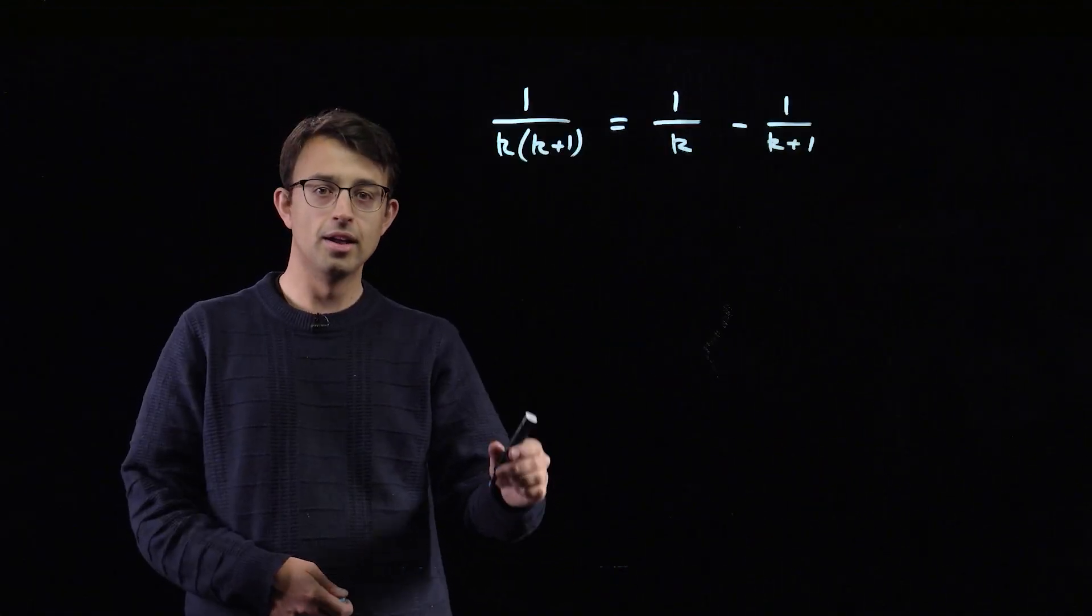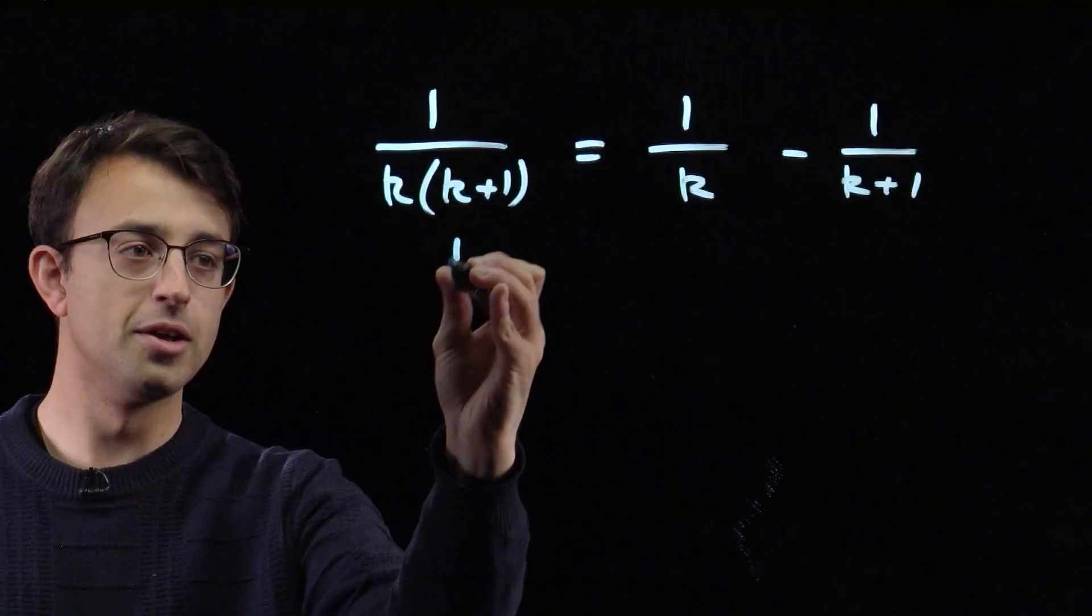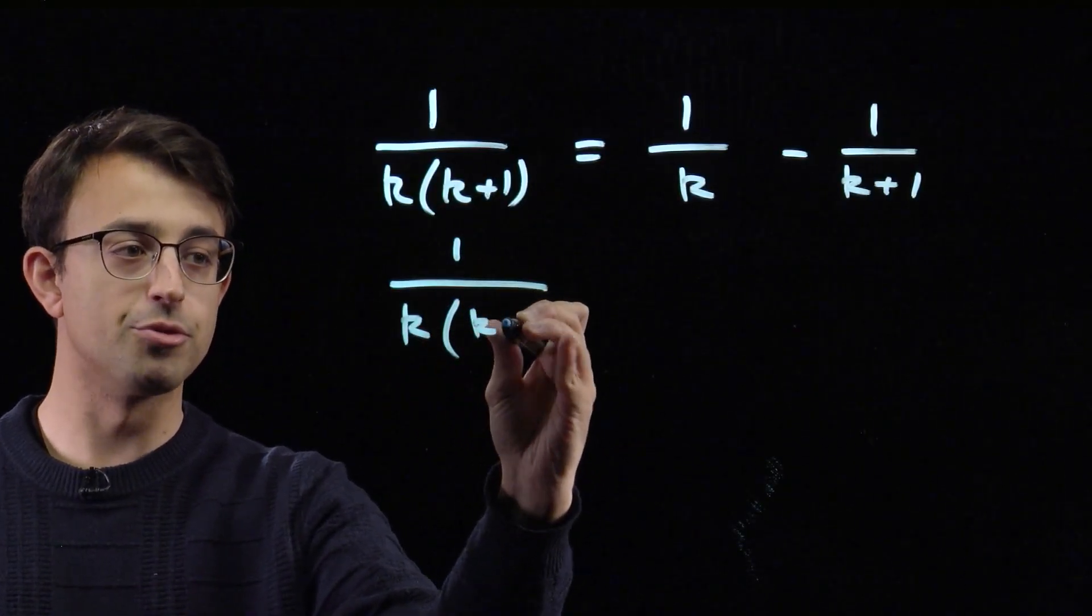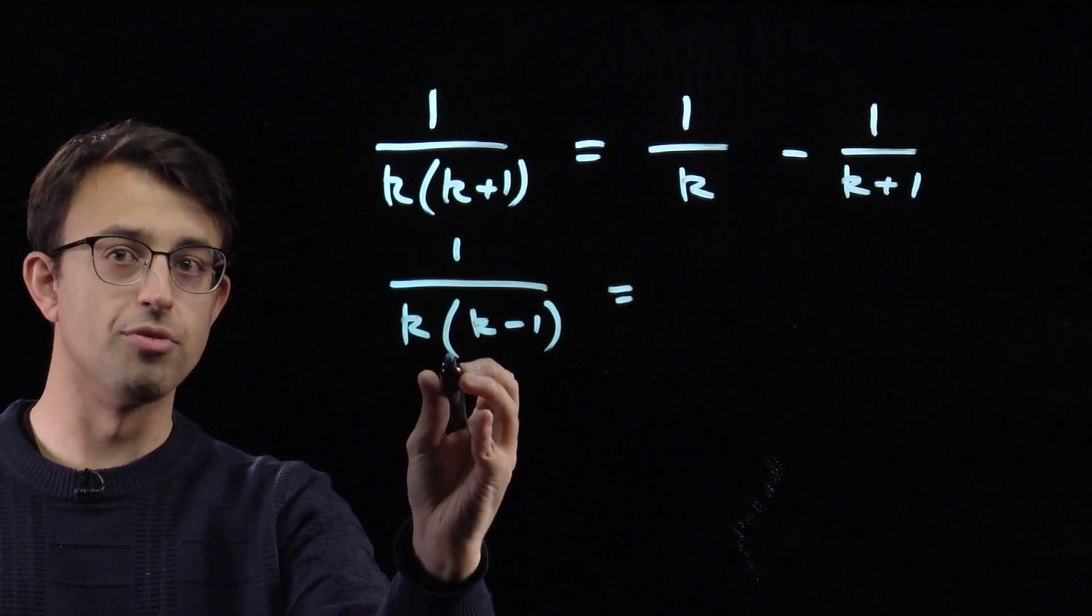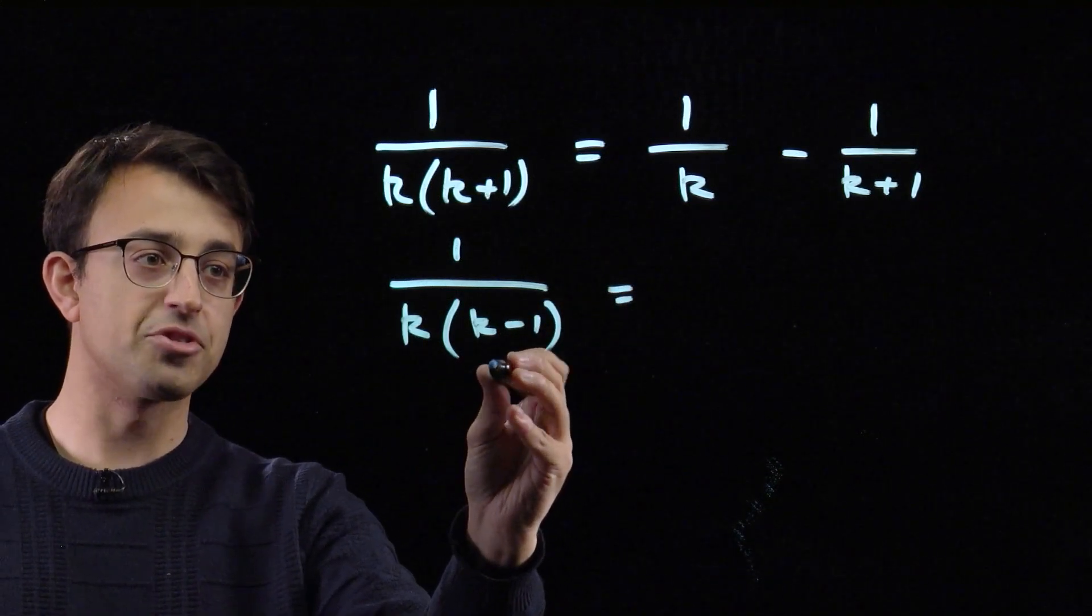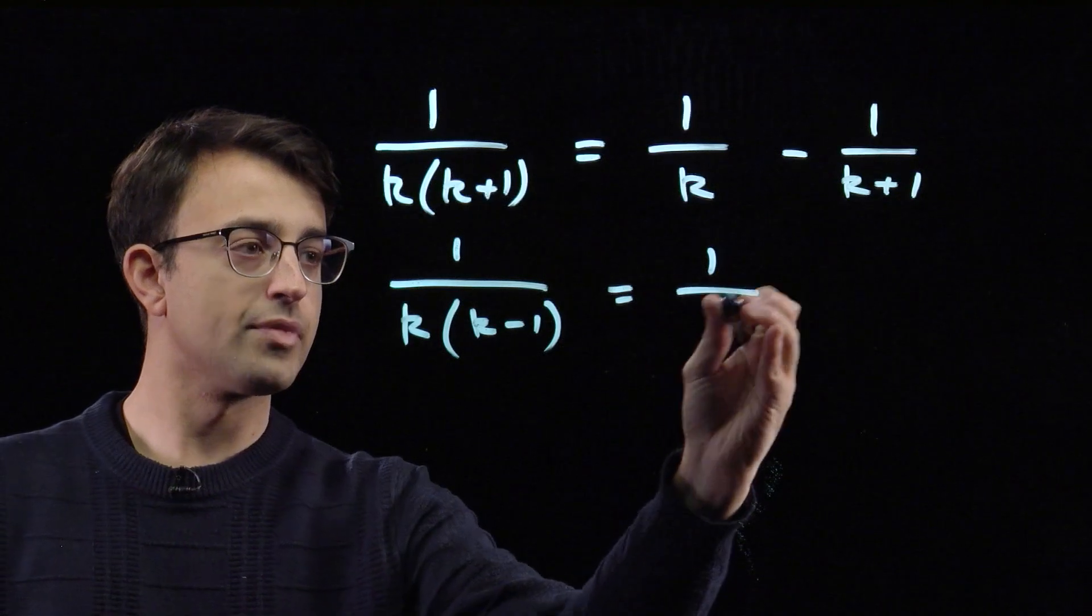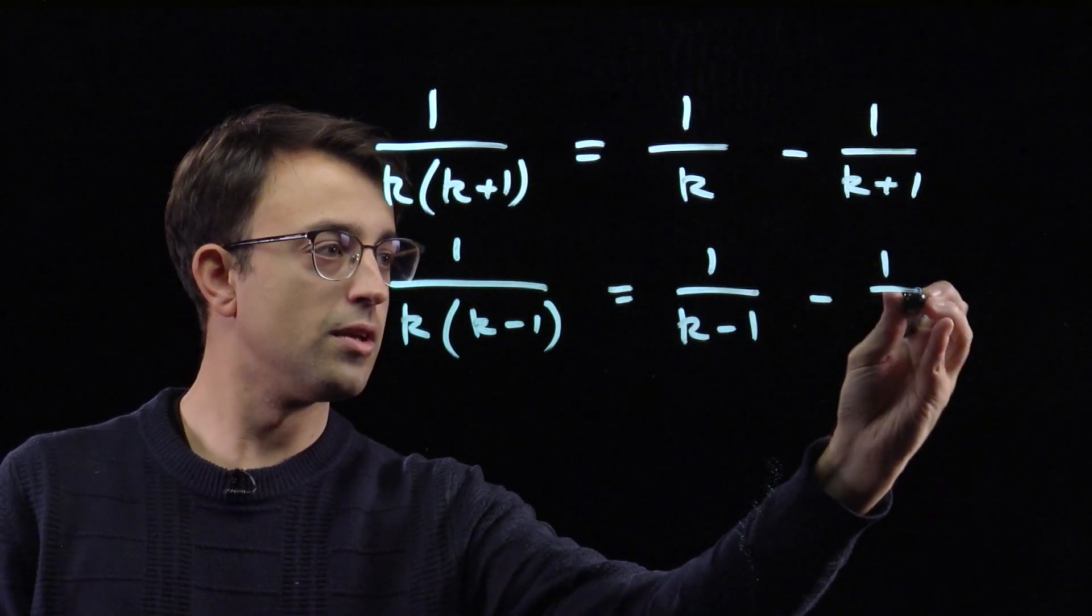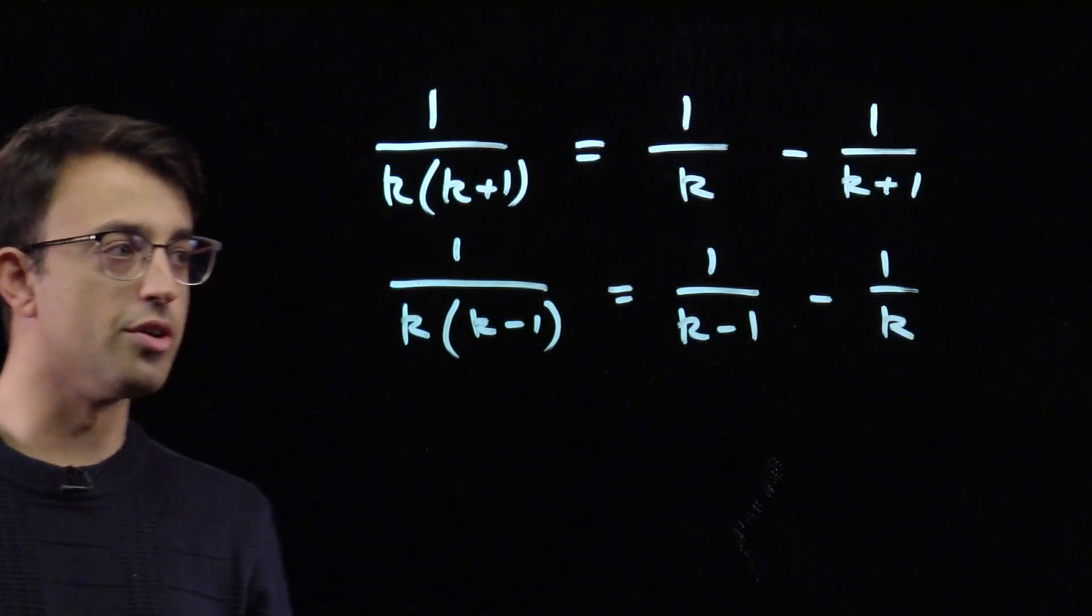While we're here, let's deal with something similar. Even though it's not directly connected to how the triangle numbers were written in the problem statement, we can also write 1 over k times k minus 1 as 1 over k minus 1 minus 1 over k.